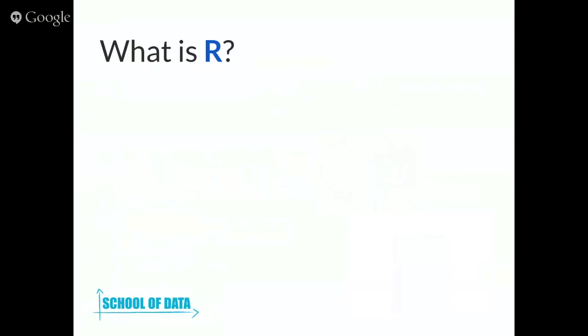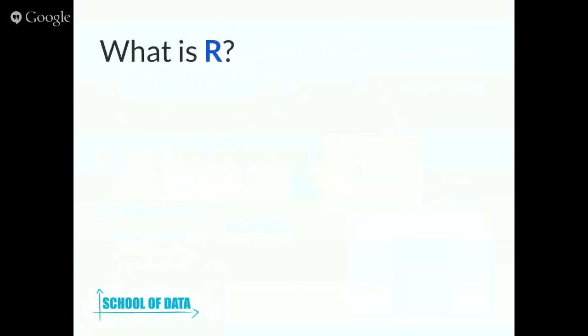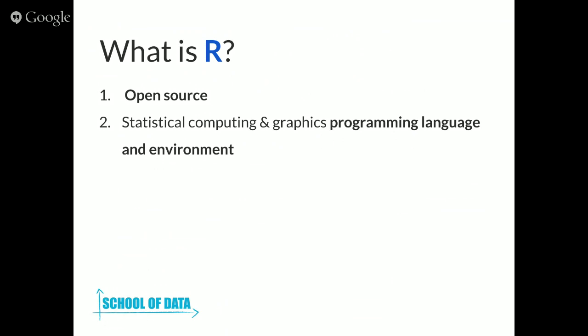So what is R? The first and most exciting thing is that R is an open source statistical tool. It is a statistical programming language, but it also allows you to work with various graphics and visualizations. It's not just a programming language - it's also an environment, because it provides several tools for you to integrate and get work done statistically, but also using visualizations and graphics.